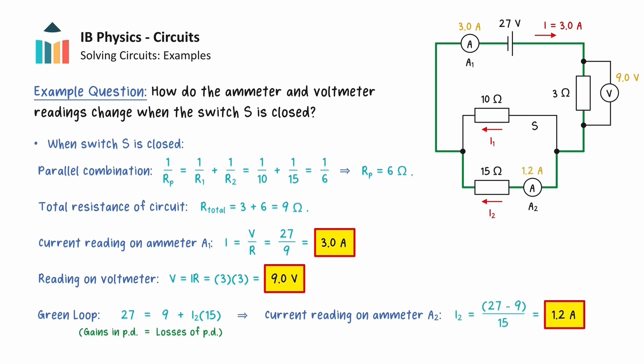Let's now compare these values with the values we obtained when the switch was open. The total resistance of the circuit decreased when we closed the switch because the resistor was added in parallel to the circuit. This meant that the total current in the circuit increased, which can be seen from the increase in the reading on ammeter 1.